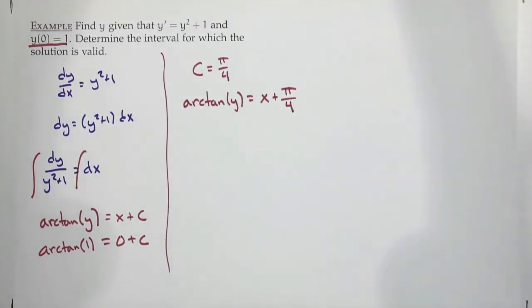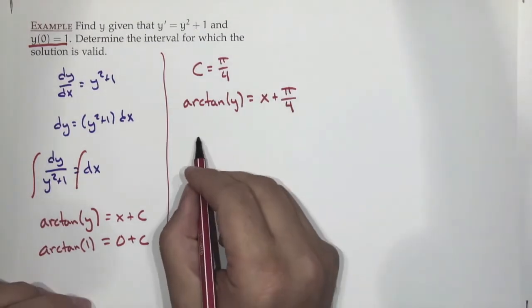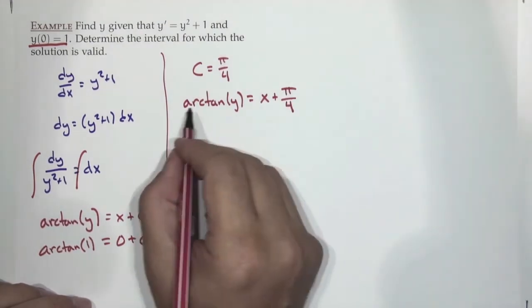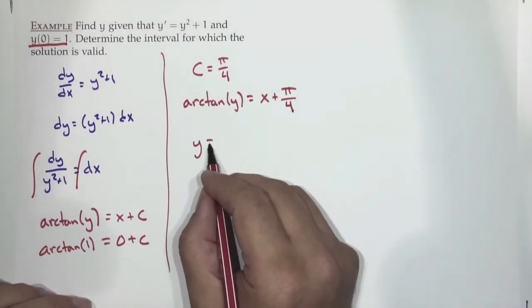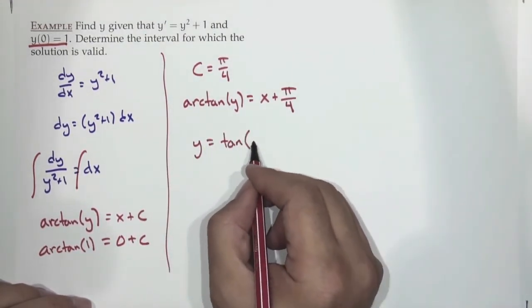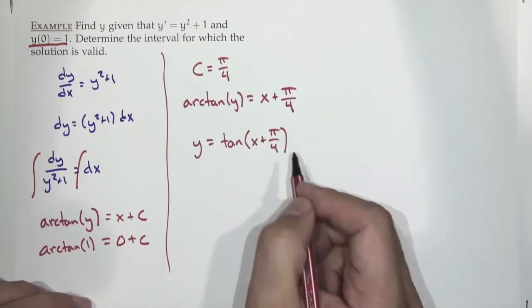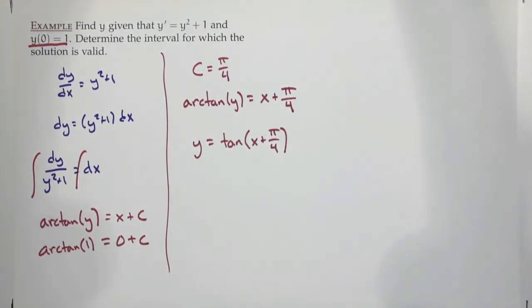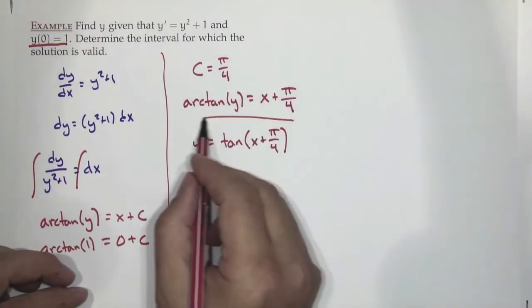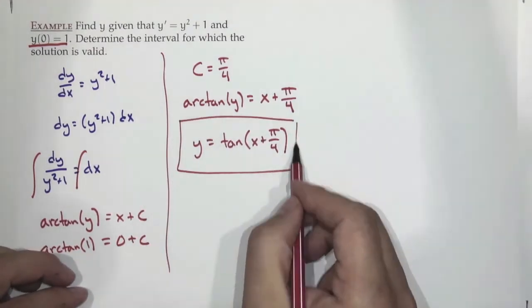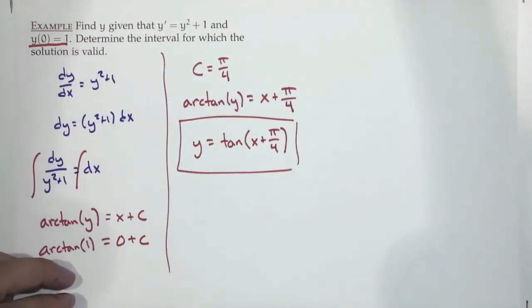To get y by itself, take the tangent of both sides, freeing y from inside the arctangent. So y = tan(x + π/4). That's our solution — correct for this differential equation with this initial condition.